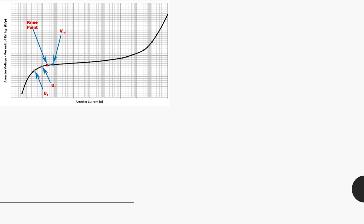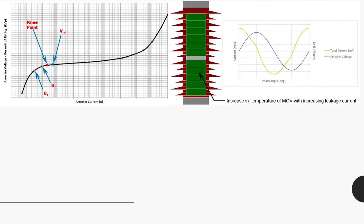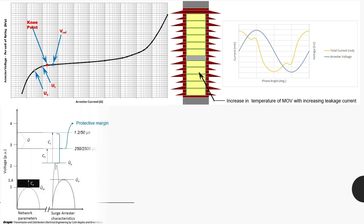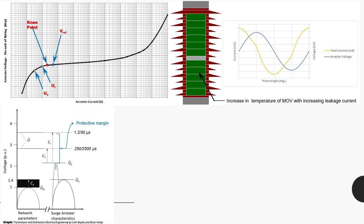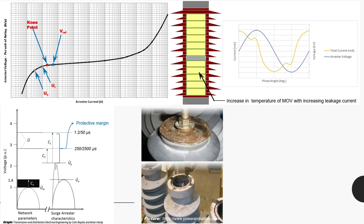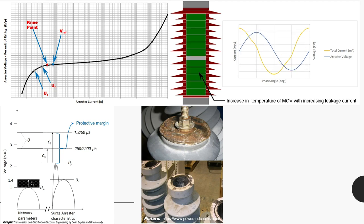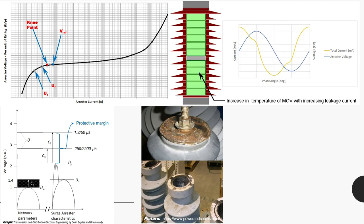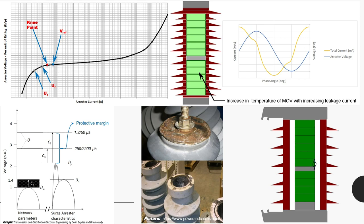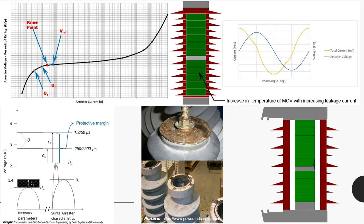Reference voltage test is performed to ascertain the rating of the product. Leakage current test is performed to ascertain the health of the product. Residual voltage test is performed to ascertain the protective margin of the product with respect to BIL. Seal test, although applicable for lightning arresters with enclosed gas volume, is performed to ascertain how protected the internal assembly is from the risk of moisture ingress.